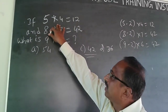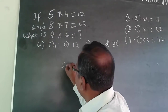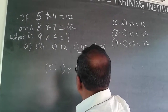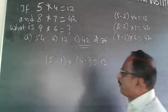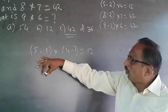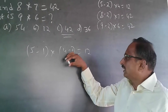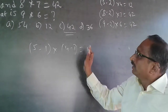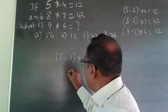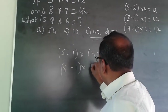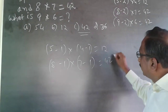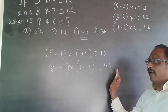However, there are multiple possible answers. Another pattern could be: 5 minus 1 is 4, into 4 minus 1 which is 3, gives 4 into 3 equal to 12. Checking with the second equation: 8 minus 1 is 7, into 7 minus 1 which is 6, gives 7 into 6 equal to 42. This pattern also matches.